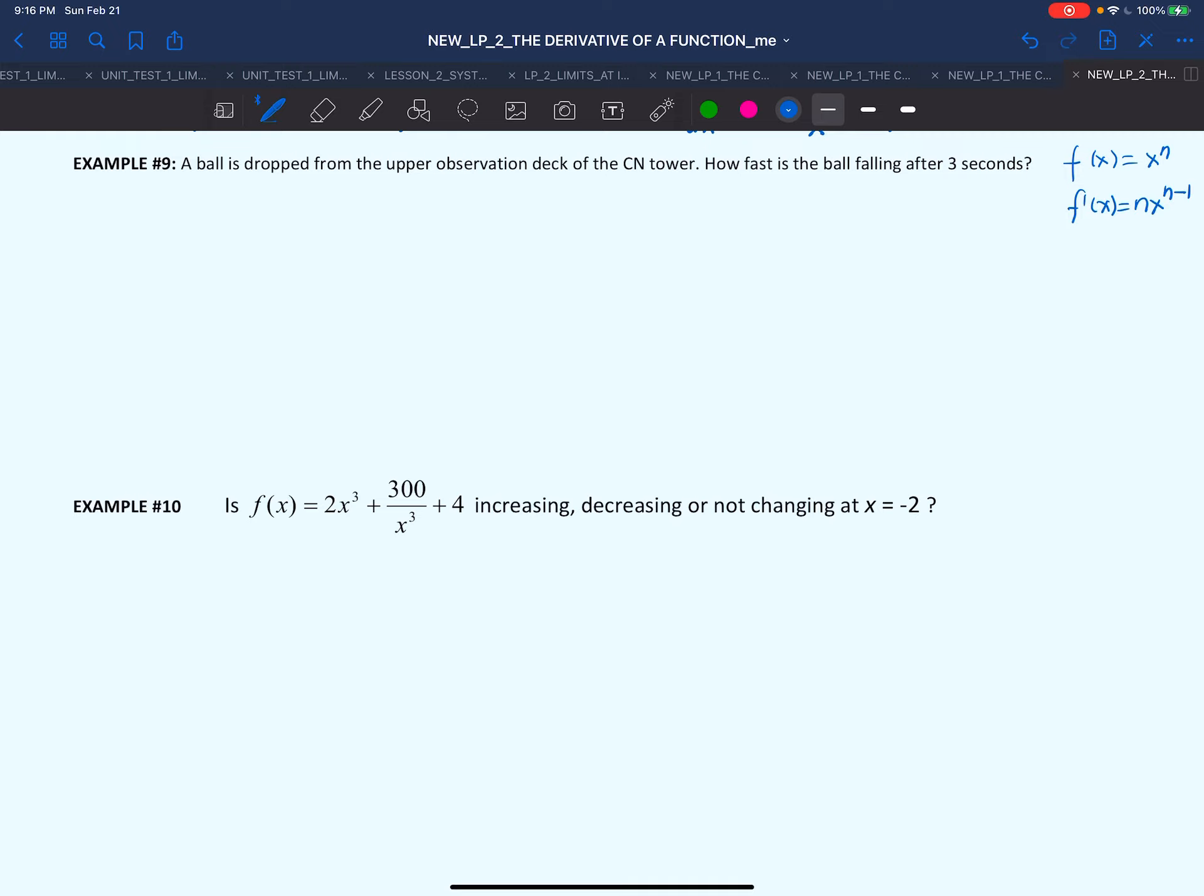Example 9 says that a ball is dropped from the upper observation deck of the CN Tower. How fast is the ball falling after 3 seconds? Remember, this is a free fall. If we're asked to find how fast the ball is falling, it means how fast the height is changing.